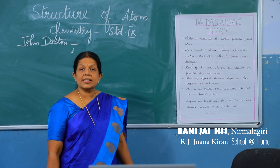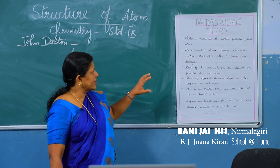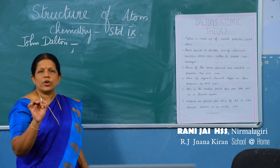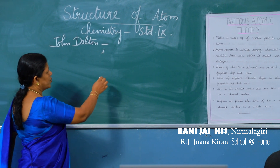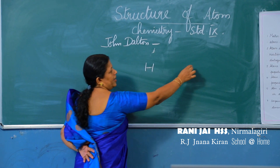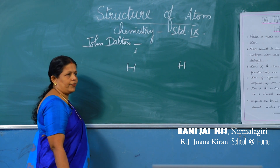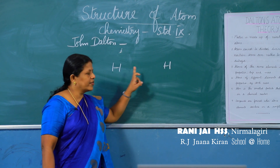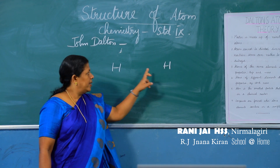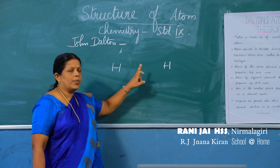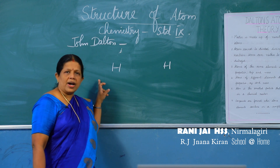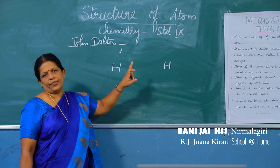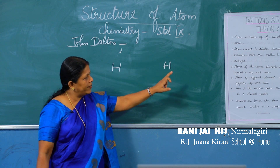The third postulate: atoms of the same element are identical in chemical properties, mass, and size. For example, if we take hydrogen atoms from different places, both are hydrogen atoms — their chemical properties will be the same, their mass will be the same, and also the size will be the same.